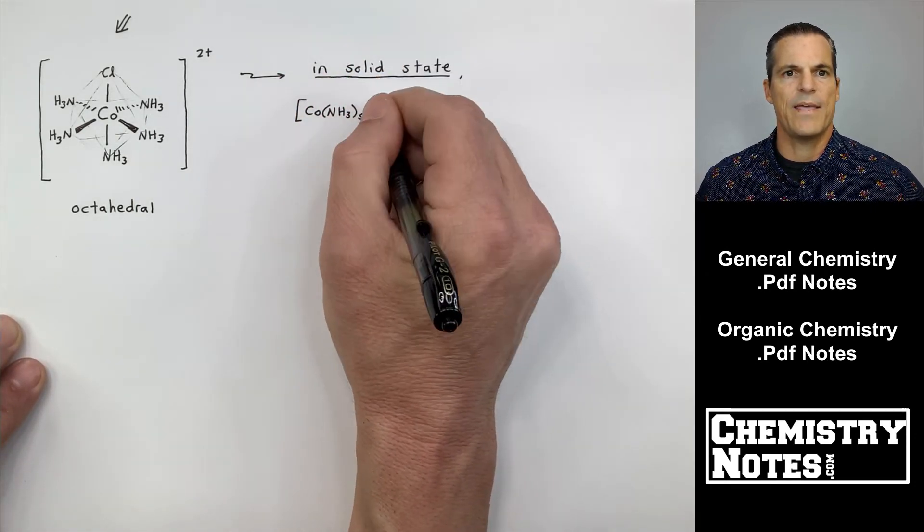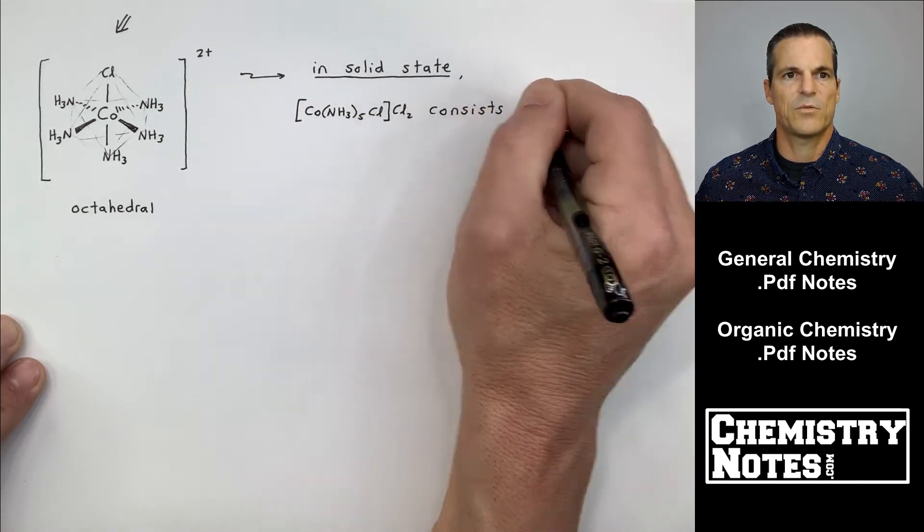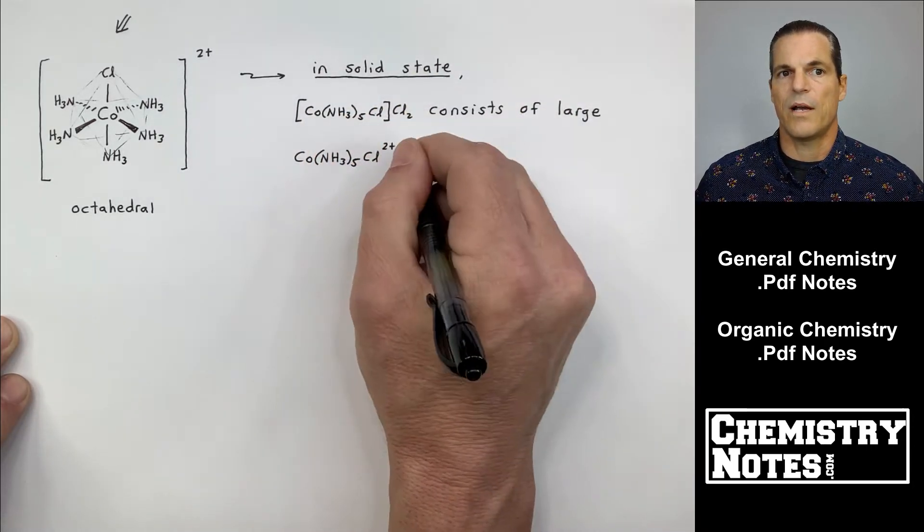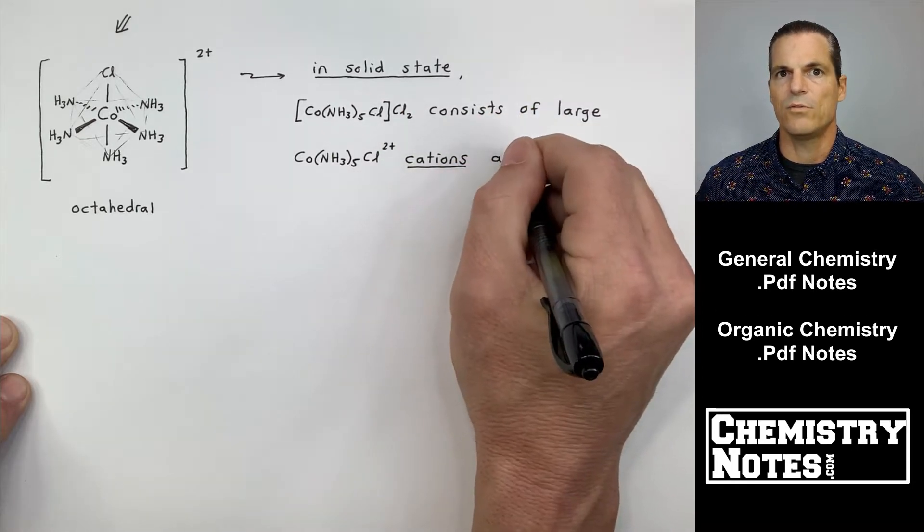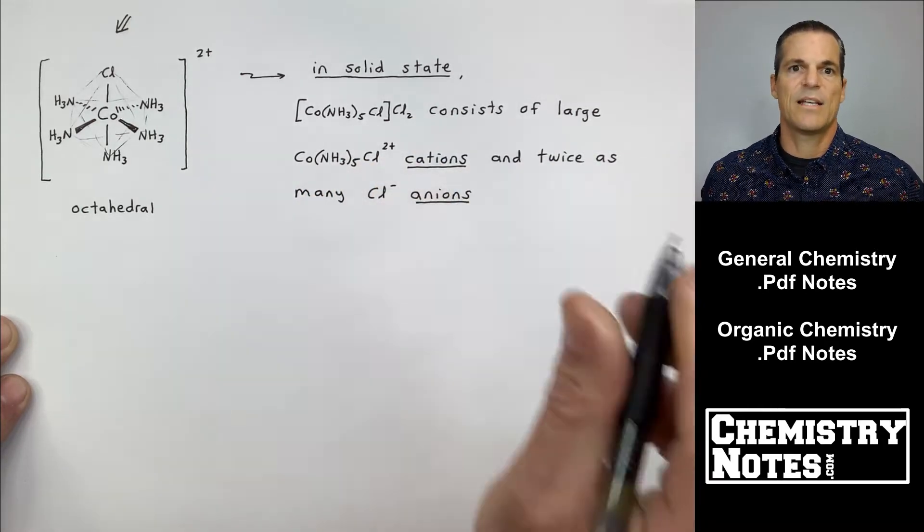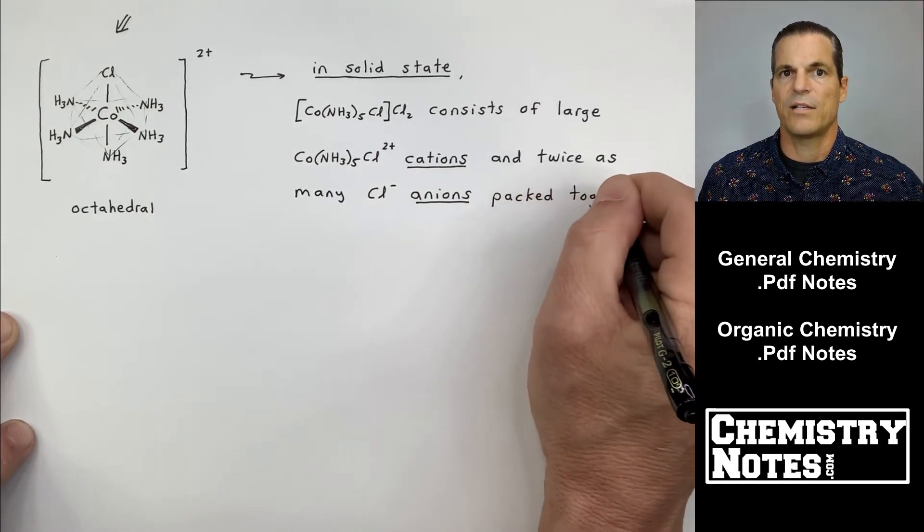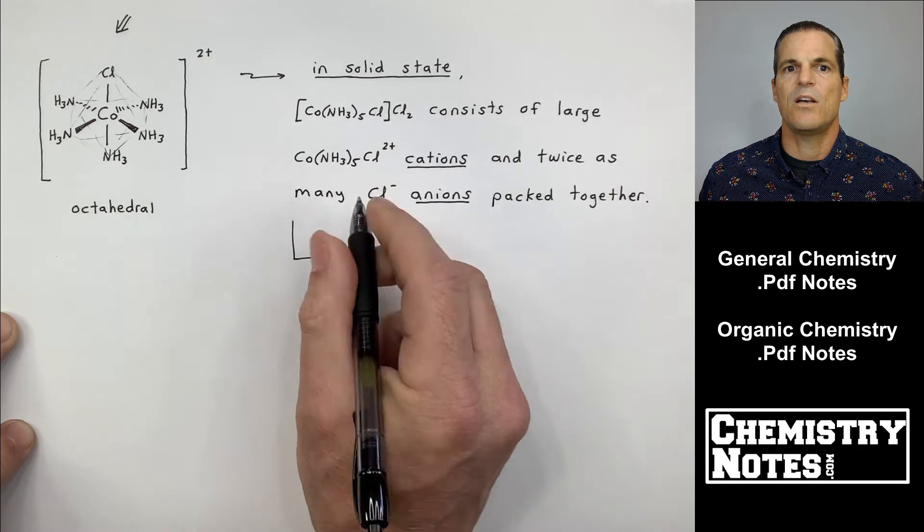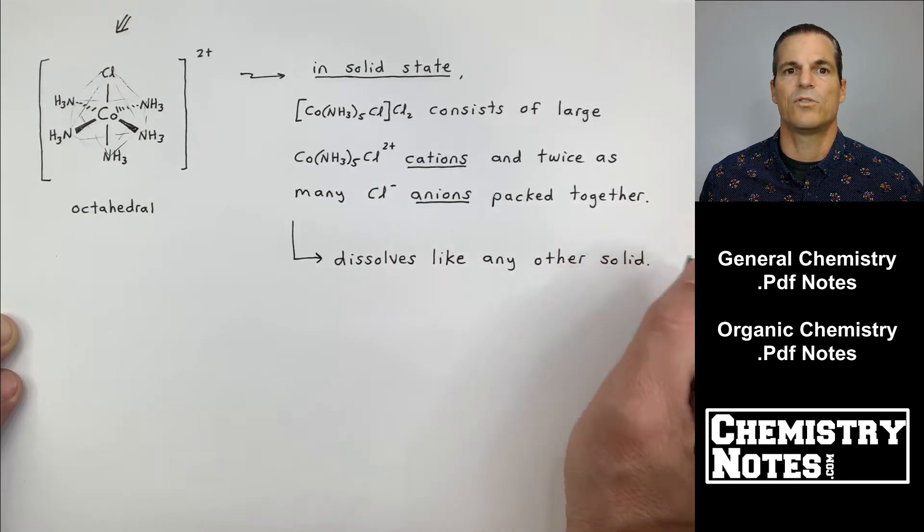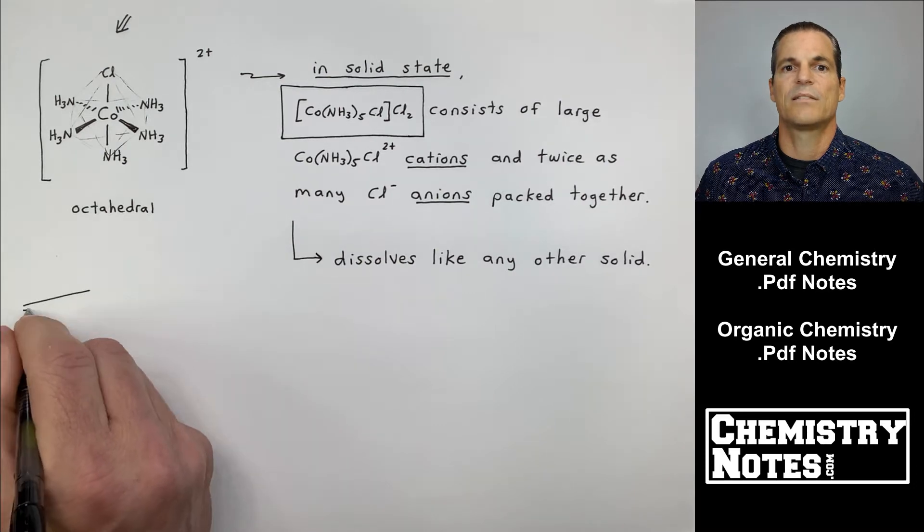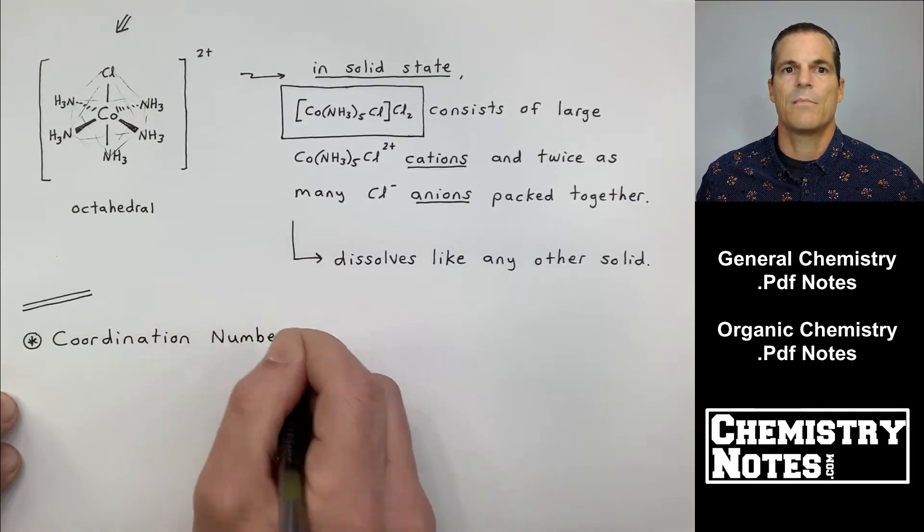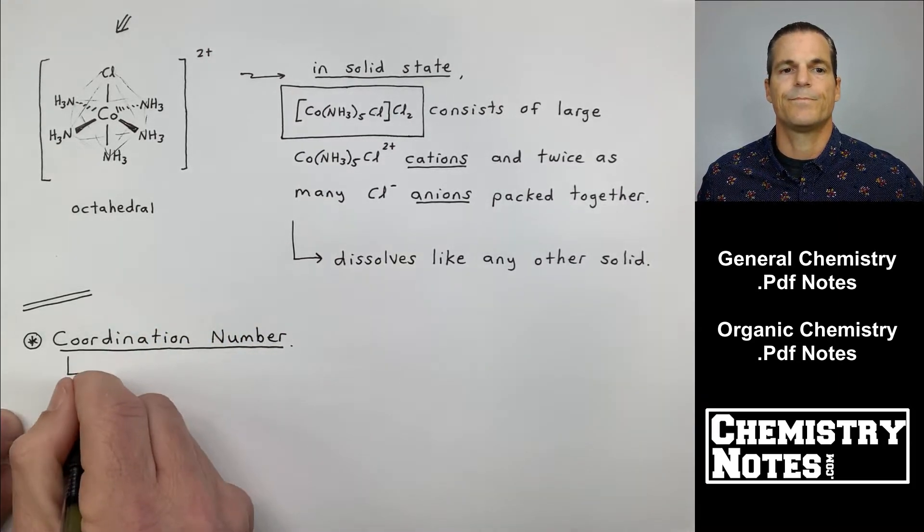So bracket Co(NH3)5Cl, 2 plus. That's what I've drawn right there on the left. Now in any solid, you have to have matching minus two somewhere. You can't just have a plus two. Where did I get the minus two? That's from two Cl minus counter ions that are also in my solid. So crystalline structure [Co(NH3)5Cl]Cl2 consists of large Co(NH3)5Cl, 2 plus cations, that's the big octahedral complex and twice as many of the little Cl minus anions, those little minus point charges packed together. And then these guys dissolve like in the other solid.